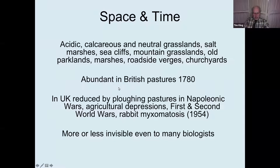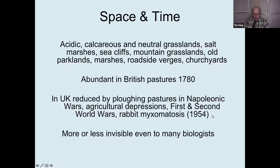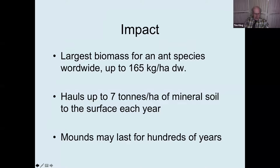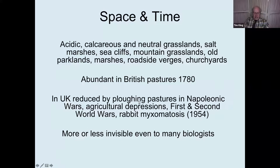One must regard anthills as a typical feature of British grasslands. But in the UK they were reduced by periods of agricultural depression: ploughing in the Napoleonic Wars, the Depression at the end of the 19th century, the First and Second World Wars and dig for victory, and rabbit myxomatosis, which made grasslands develop tall vegetation and eliminated many anthills. So they're much less frequent than they were. I would like to put them back in view of their impact on diversity, yet most biologists don't even know what they are.